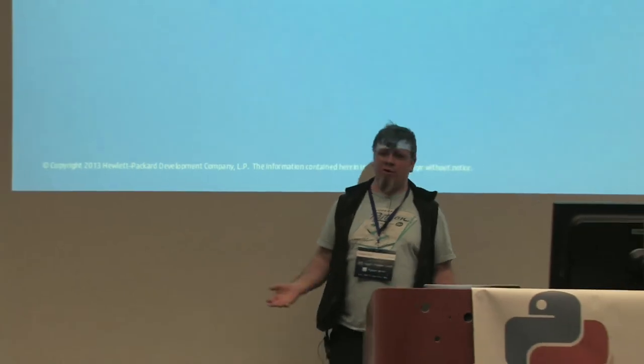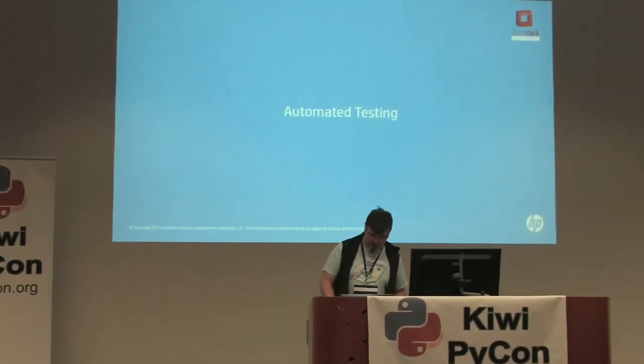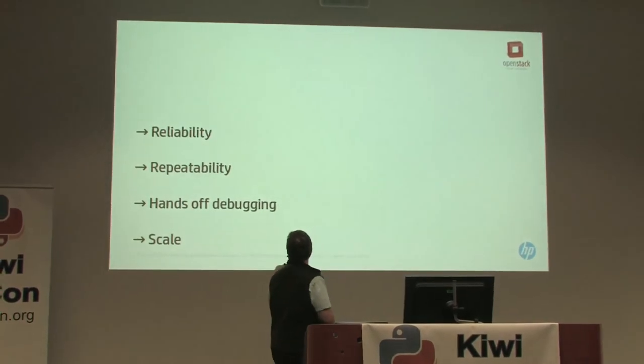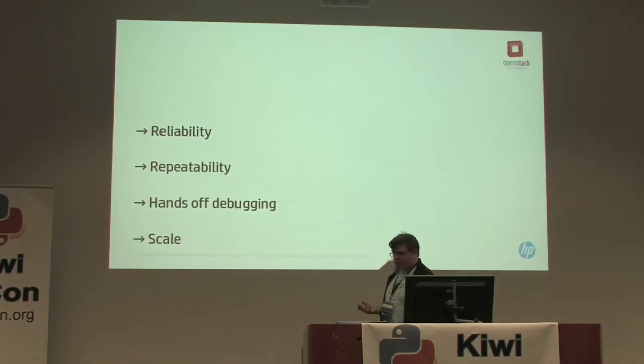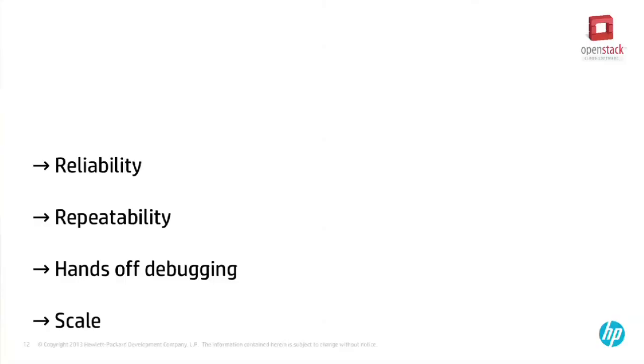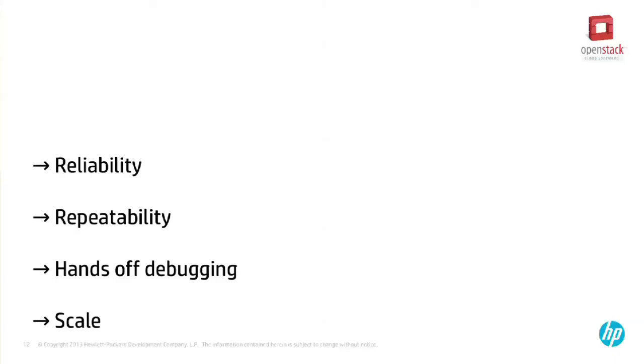This talk really isn't about Python — I wish it was — but it's about a project that uses Python. The important things for me in terms of automated testing are that it's reliable and repeatable. If it's not reliable, people will switch it off and you lose all the benefits. By repeatable I mean I can run it and you can run it — it has to be shareable and consumable. I've got to be able to reproduce the environment, otherwise I can't duplicate the problem and can't fix it.